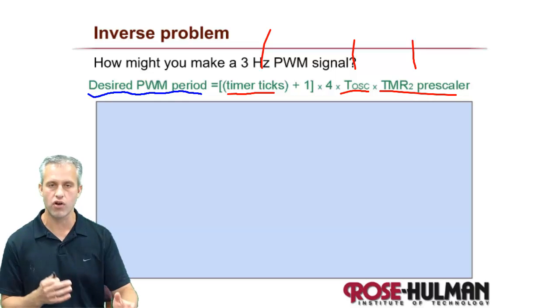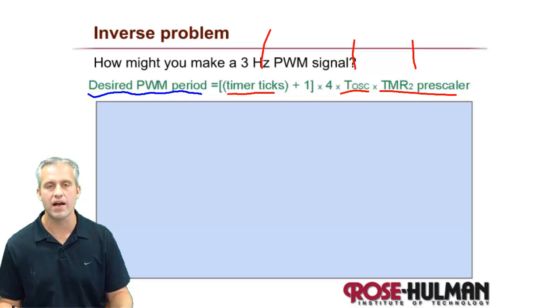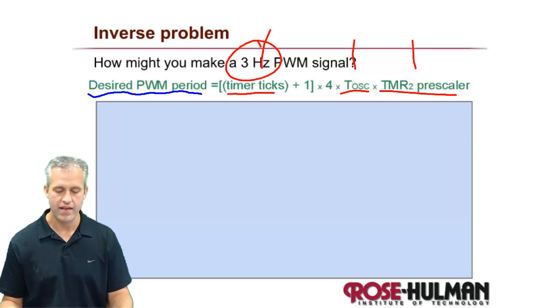So see if you can figure out what it is. You might just have to pick something, try it, see if it works. Go back and forth until you find something that works. So see if you can give me a 3 hertz PWM signal. Take a minute and see if you can solve it.